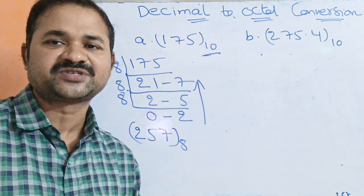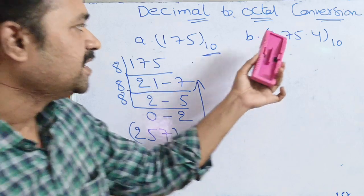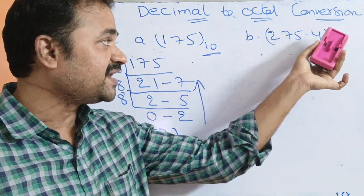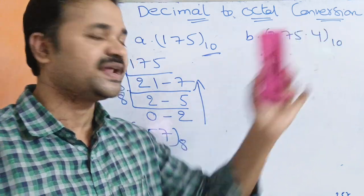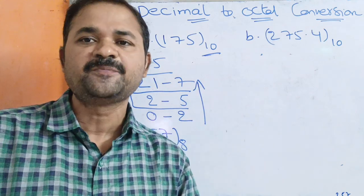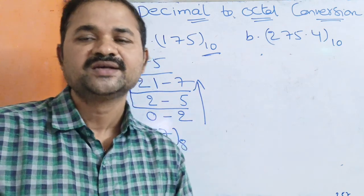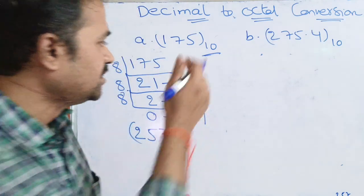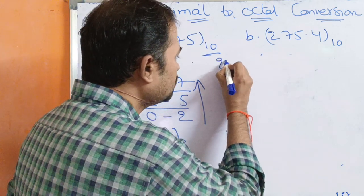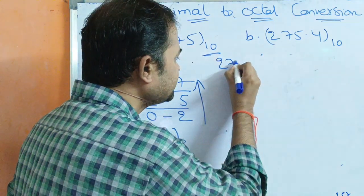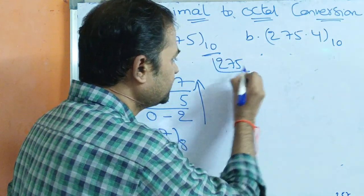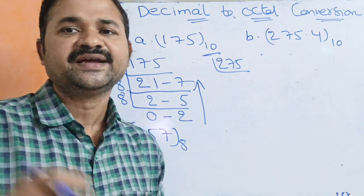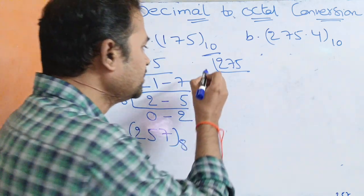Now let us solve the second problem. Here the decimal number has both an integer part and a fractional part. So first let us focus on the integer part, which is 275. We simply need to perform the division operation until we get a quotient of 0.